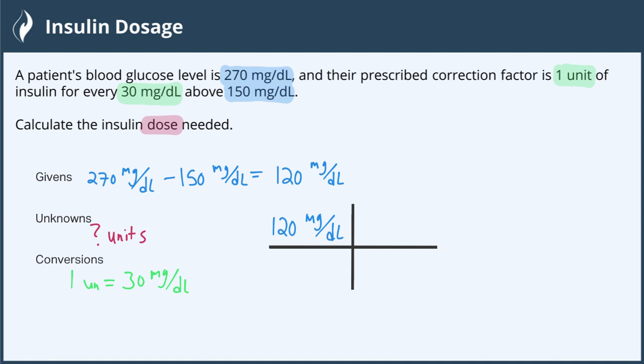We want the milligrams per deciliter to cancel, so we would write 30 milligrams per deciliter on the bottom, and that means we put one unit on the top. This does cancel that unit for us, leaving us with just insulin units as our answer.